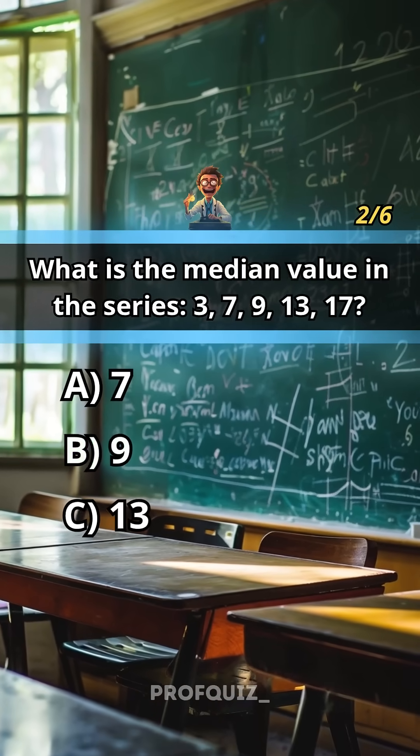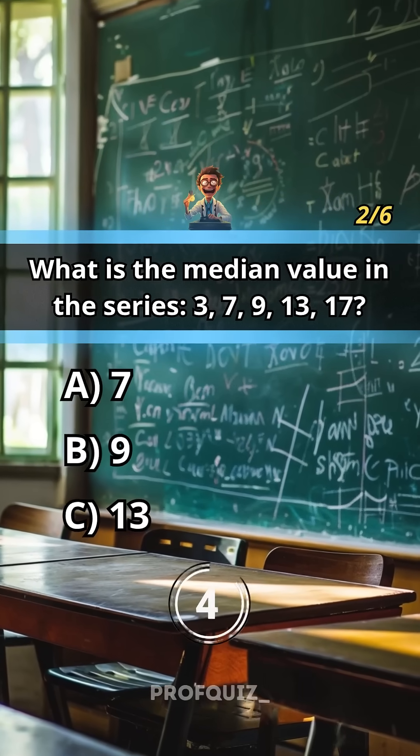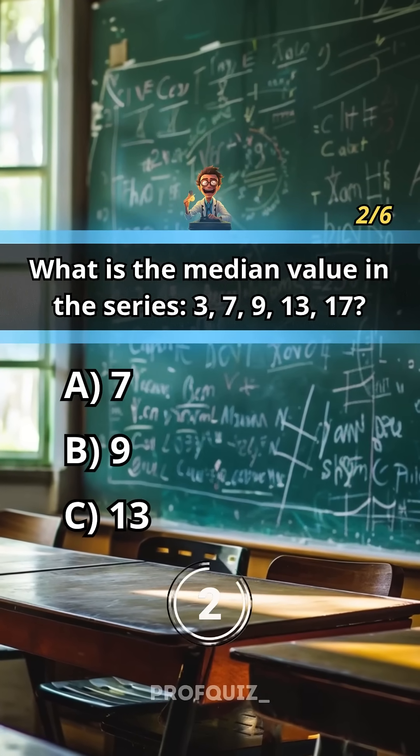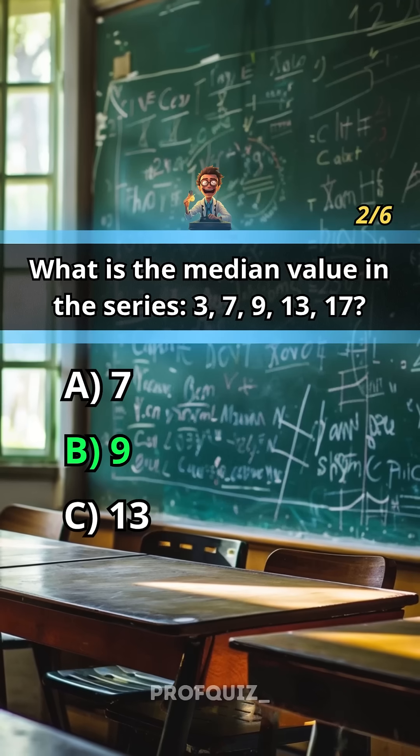What is the median value in the series 3, 7, 9, 13, 17? Answer B, 9.